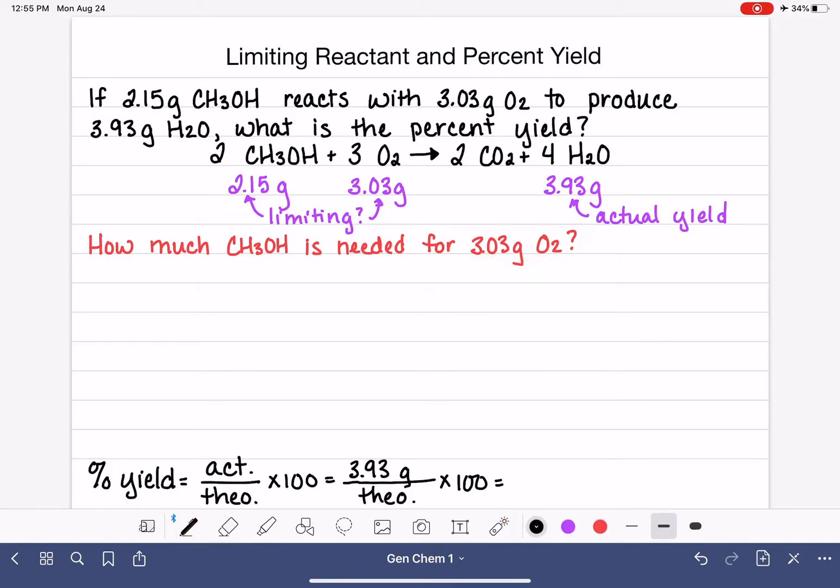So I'm going to be doing a stoichiometry problem now, kind of shifting gears. 3.03 grams of O2. And we're just taking this number, and we are going to be converting it to grams of CH3OH. In our first step, we go from grams of O2 into moles of O2. One mole of O2 is 32 grams.